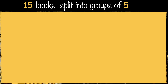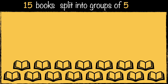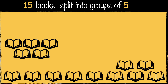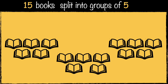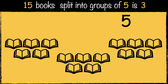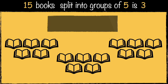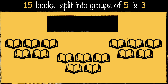Here's the last example. We have 15 books and we need to organize them into stacks of five. How many groups of five can we make? One, two, three. We've made three groups of five using 15 books. This is how we write it as a calculation: 15 divided by five equals three.